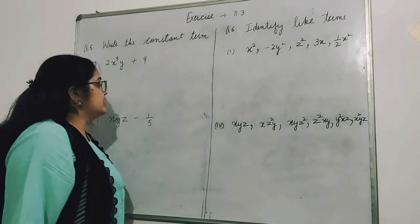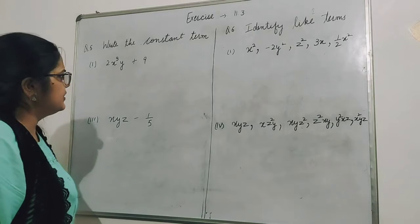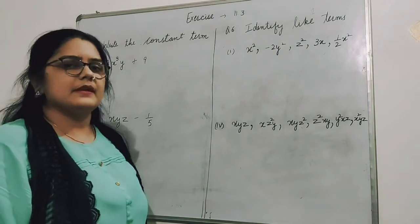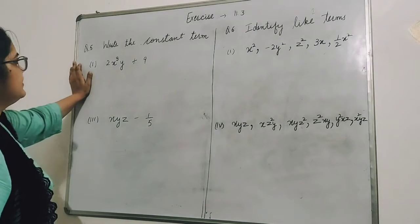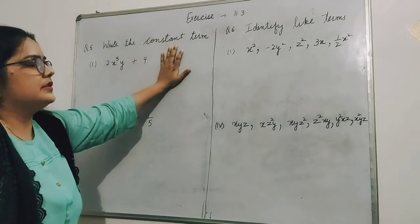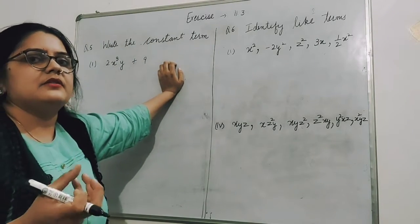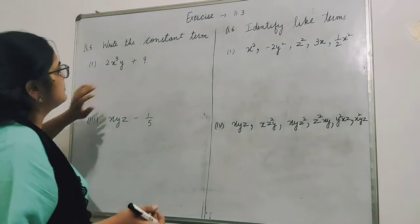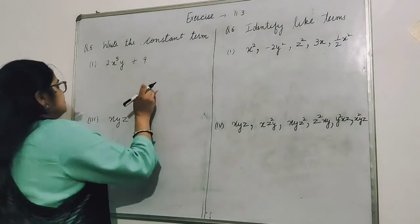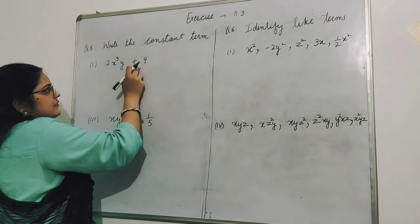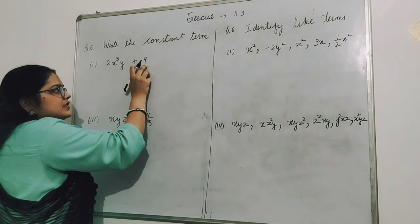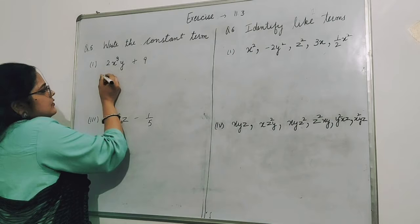In exercise 11.3, question number 5 - question number 4 we have done yesterday. Now question number 5: write the constant term. The constant term, I have told you, is the fixed numerical value. Here the constant term is 9, so 9 is the constant term.